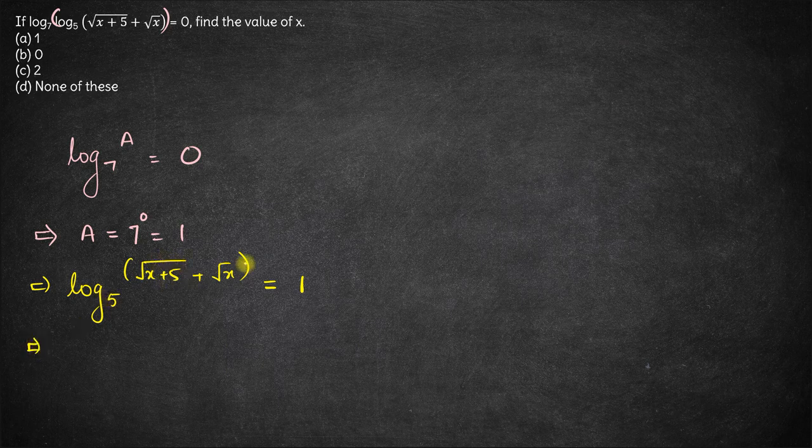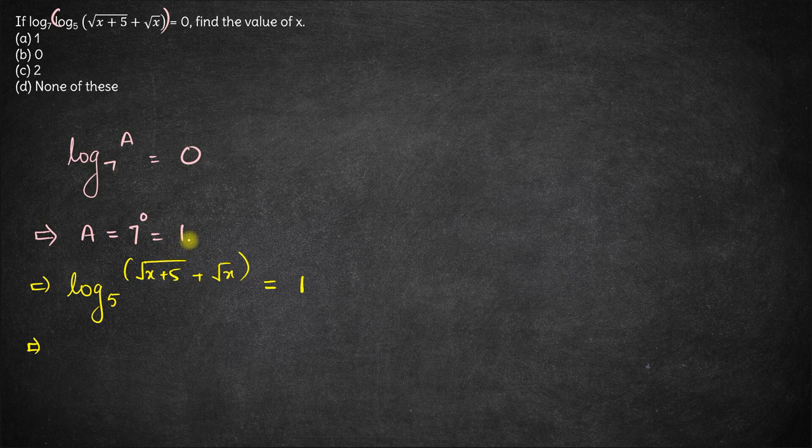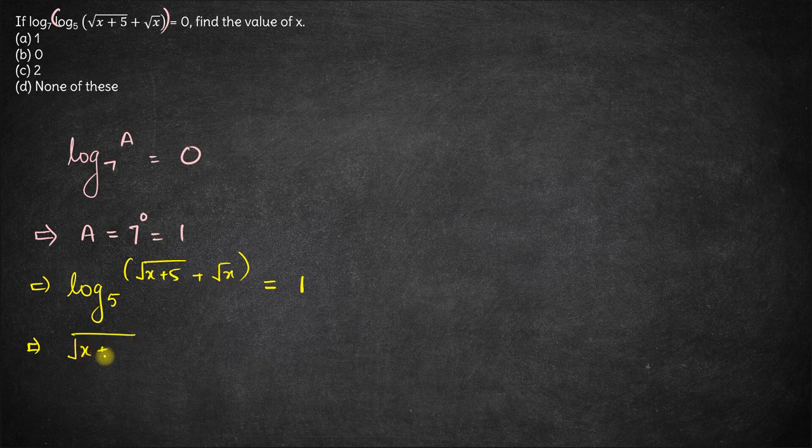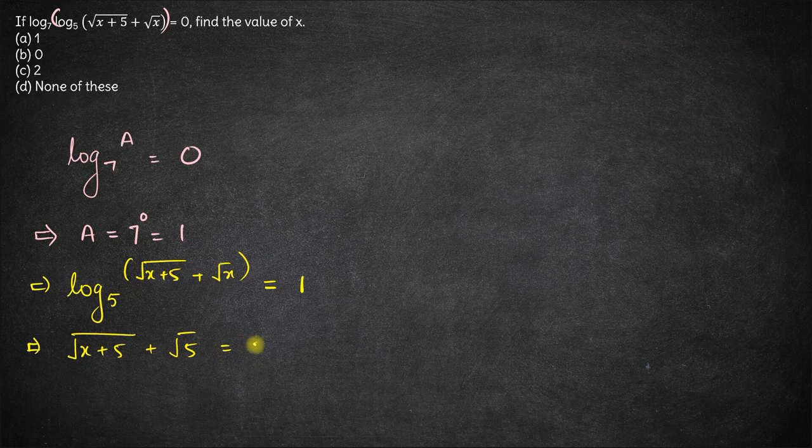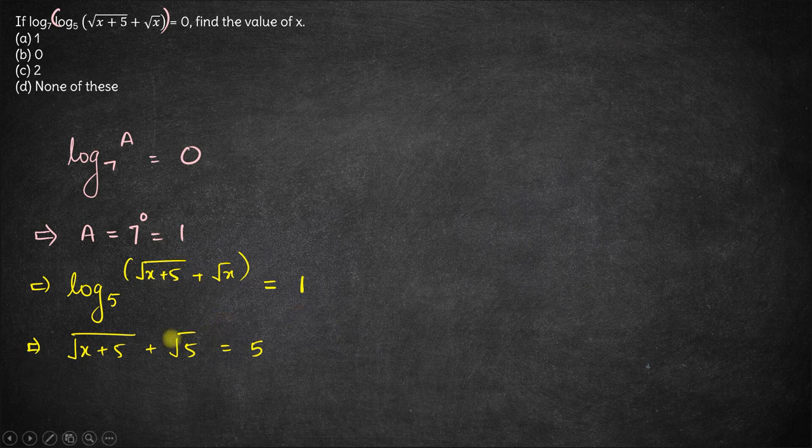Again we have log of an expression base 5 is 1. So let's convert this into exponential equation. The number which is root of x plus 5 plus root x equals the base which is 5 to the power 1, which is effectively 5. So this is what we have.